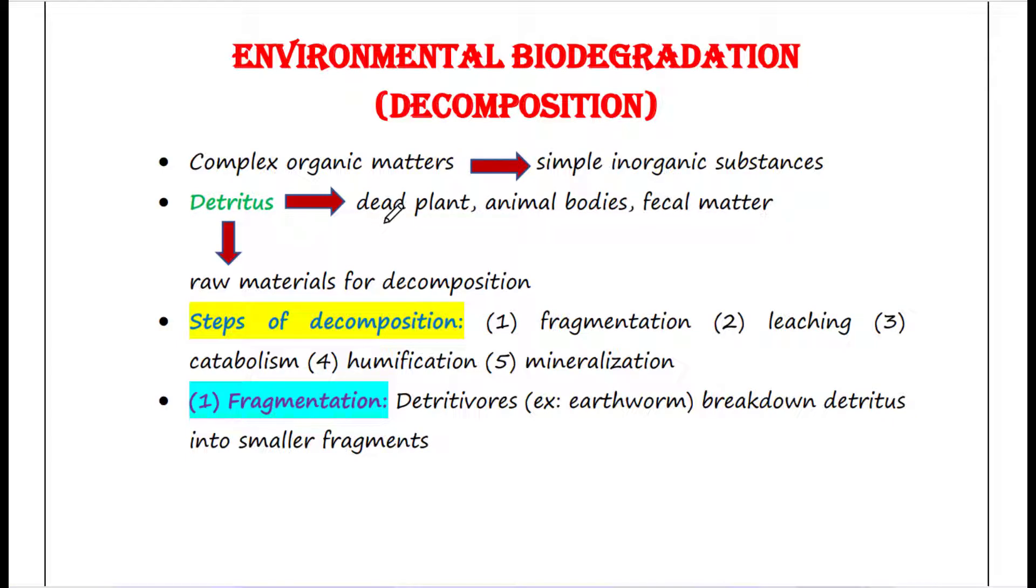Biodegradation or decomposition is a process where complex organic matters are broken down into simple inorganic substances which plants can absorb. Because plants cannot absorb complex materials, and if plants cannot absorb them, we also can't get them from plants. So biodegradation or decomposition is very much essential for our survival.